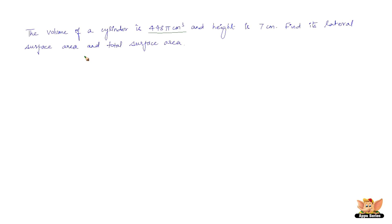Find its lateral surface area and total surface area. Before we solve the problem, let us see how it should be solved. We have height and we have the volume. The lateral surface area is the curved surface that covers the cylinder excluding the top and the bottom. The formula for lateral surface area is 2πrh cm².